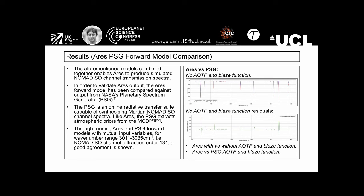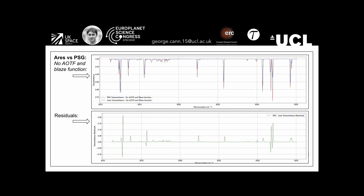All of the aforementioned models combined enable ARIES to produce simulated NOMAD spectra. We've chosen to compare the ARIES forward model against NASA's Planetary Spectrum Generator. Through running ARIES and the PSG forward models with mutual input variables for diffraction order 134, we can see a good agreement. We considered various examples whereby no AOTF and blaze function has been used, ARIES with and without the AOTF and blaze function, and ARIES versus the PSG where both models have incorporated the AOTF and blaze function.